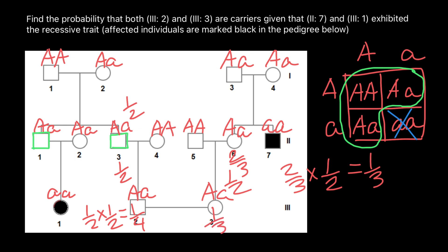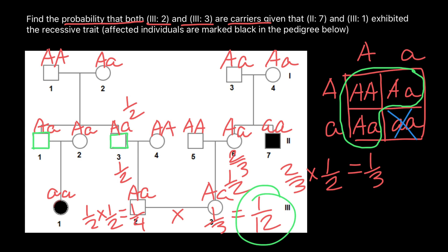Now let's read our question again: find the probability that both 3,2 and 3,3 are carriers. That means we have to multiply these two independent probabilities to find the probability that they are both simultaneously carriers — we use the product rule. One-quarter times one-third is one-twelfth. This is our answer. Subscribe and see you in the next video. Goodbye.